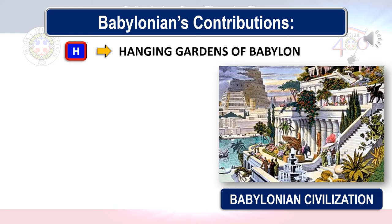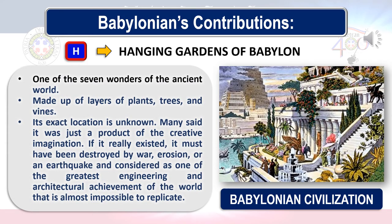For Babylonians' contributions, H stands for the Hanging Gardens of Babylon, considered one of the seven wonders of the ancient world. It was made of layers of plants, trees, and vines. However, its exact location is unknown — some say it was just a product of imagination, while others say it was destroyed by war, erosion, or earthquake. The Hanging Gardens of Babylon was considered the greatest engineering and architectural achievement of the ancient world and is almost impossible to replicate.